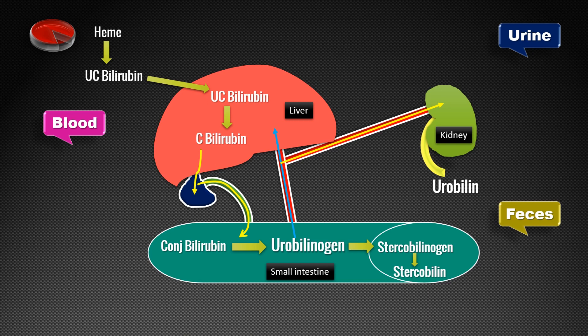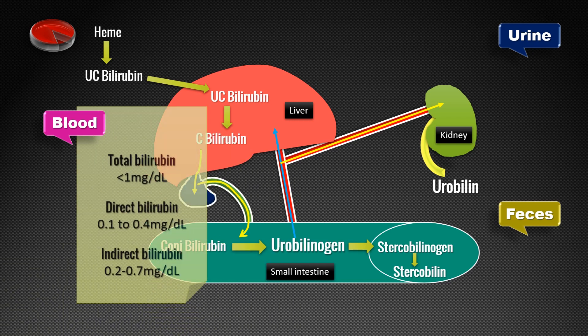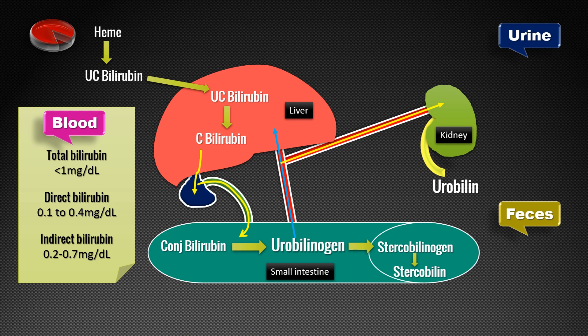We can also collect urine and perform several tests. Very rarely we collect stool or feces to estimate stercobilin. The most common test based on excretory functions of the liver from a blood sample is total bilirubin, which includes both conjugated and unconjugated bilirubin. Normally its level should be less than 1 mg/dL. Direct bilirubin, also called conjugated bilirubin, has a normal level of 0.1 to 0.4 mg/dL. Unconjugated bilirubin, also called indirect bilirubin, has a normal level of 0.2 to 0.7 mg/dL.